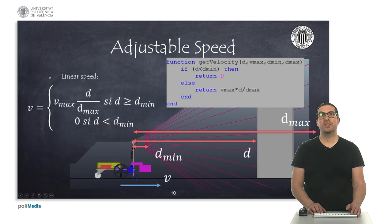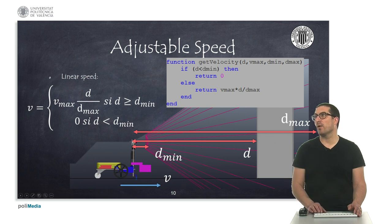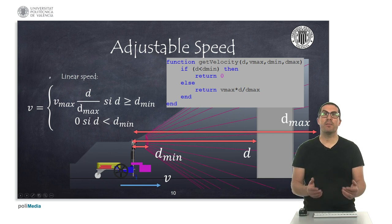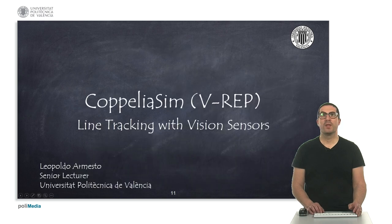And also, we can adjust the linear speed based on the distance, or the sensor distance, and this is something we already saw again. And in this case, what I recommend is to implement the getVelocity function, as you can see here, in order to obtain the linear velocity of the robot.